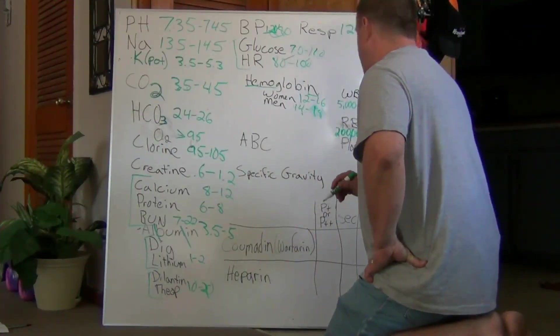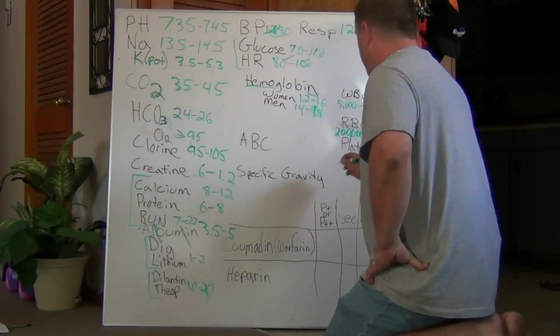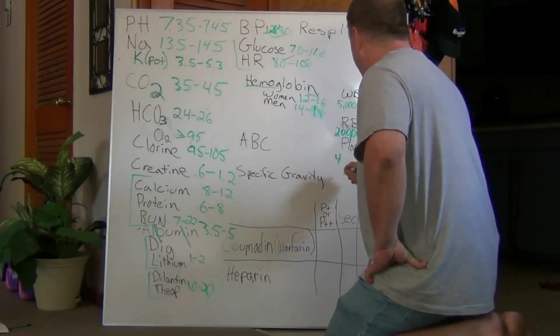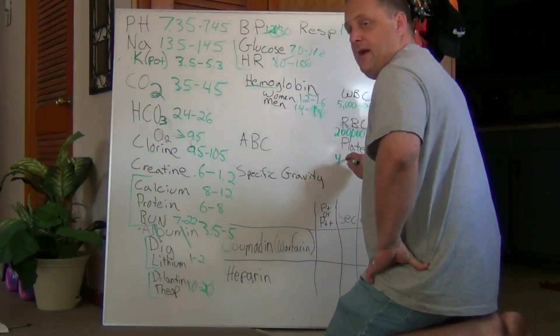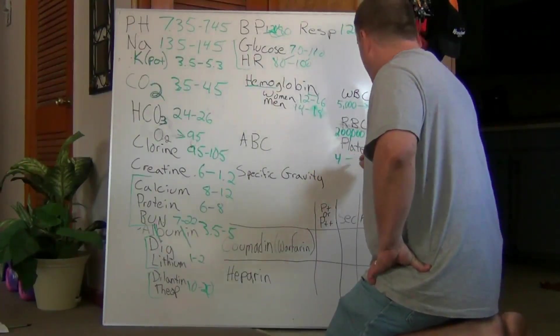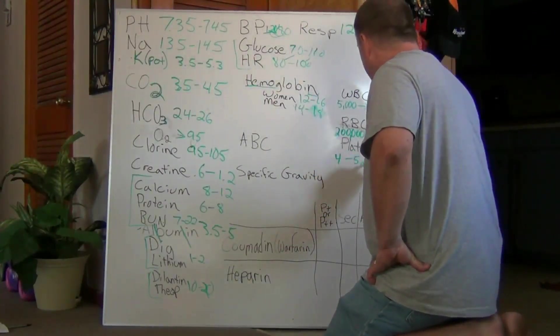On platelets, it's going to be a seven digit number. So we're going to say 4, a seven digit number would be million. So platelets are four to five million.